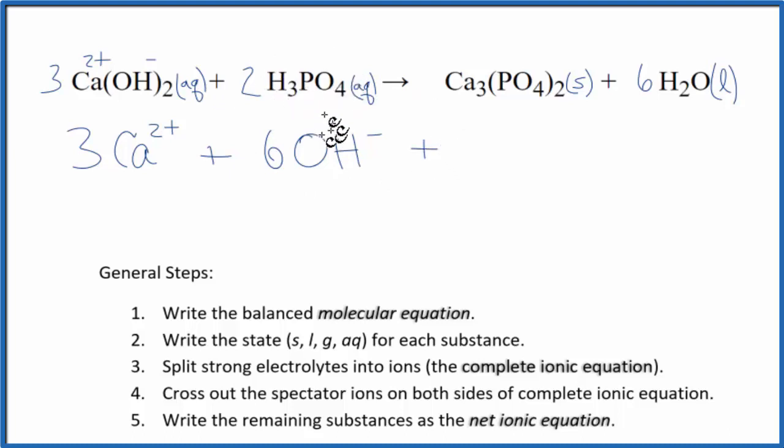Plus, we said that this phosphoric acid is a weak electrolyte. It's a weak acid. So it's not going to split apart. We're just going to put 2H₃PO₄ and leave it like that. Those are the reactants. For the products, calcium phosphate, that's a solid. Since that is a solid, we don't split that apart into its ions either. So it just stays Ca₃(PO₄)₂. And water, which is a liquid, we don't split that up either, and we have 6 of those.